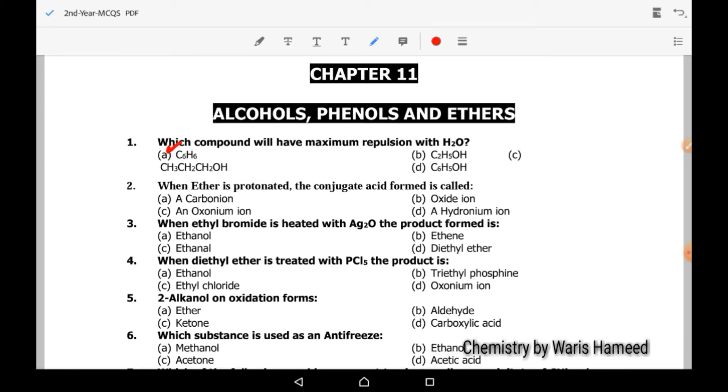Next, when ether is protonated, the conjugate acid formed is called an oxonium ion. In this case, the lone pair of oxygen will pick that proton and will form oxonium ion.